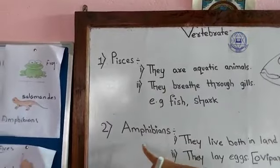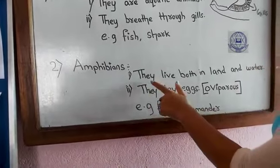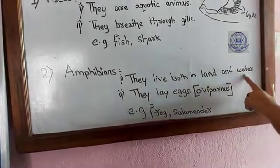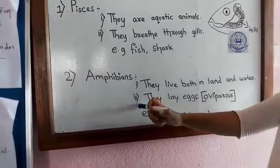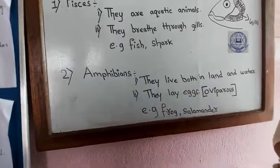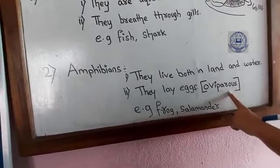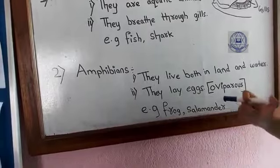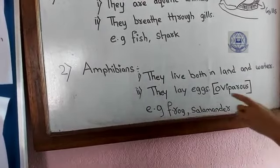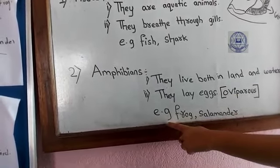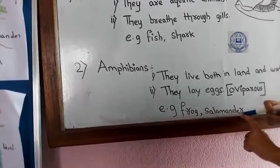The second class is Amphibians. They live both on land and in water. The second characteristic is they lay eggs — I have written 'oviparous' in brackets, which means animals that lay eggs are called oviparous. Examples are frog and salamander.